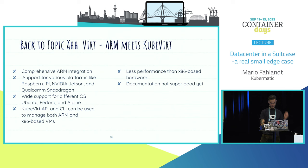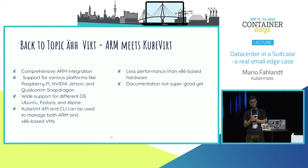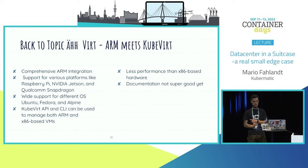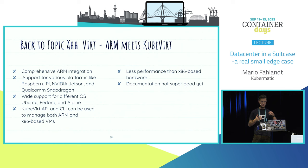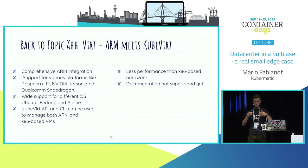Back to virtualization - KubeVirt has an ARM integration, which is nice. It supports many various platforms: Raspberry Pi, NVIDIA Jetsons, Snapdragons, and so on. You can also put Jetsons on this board, so you can add TPUs and GPUs. There's wide support for different OS systems. With the KubeVirt API, it's very easy to manage both ARM-based VMs and x86-based VMs, which makes it easy to prepare and test for moving to a complete ARM structure.